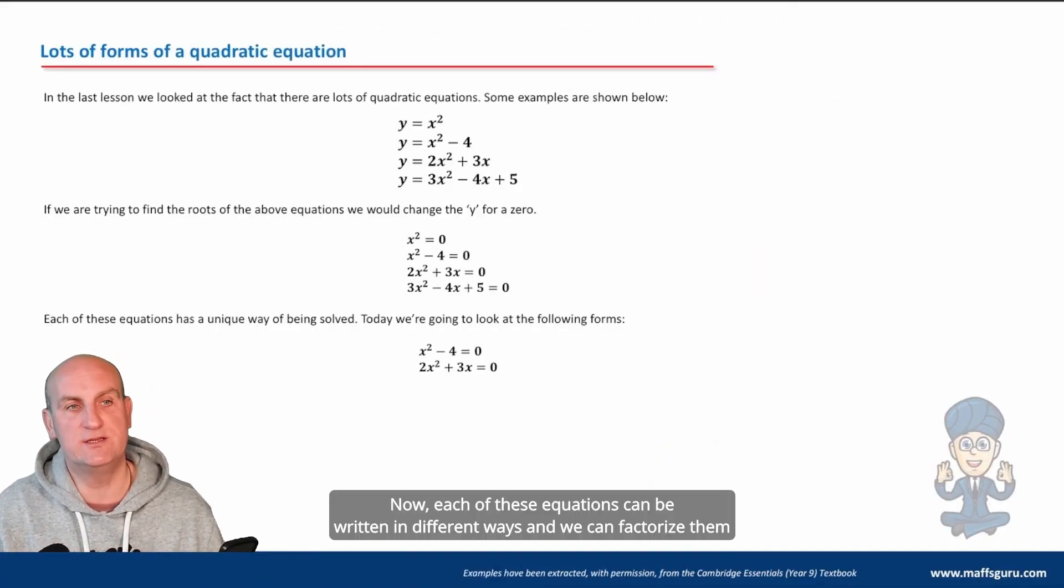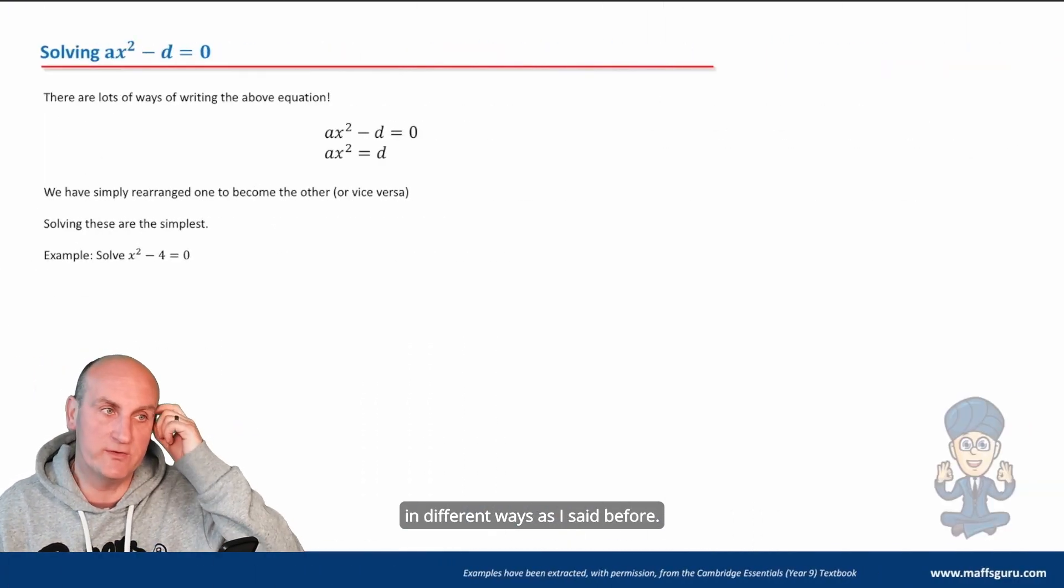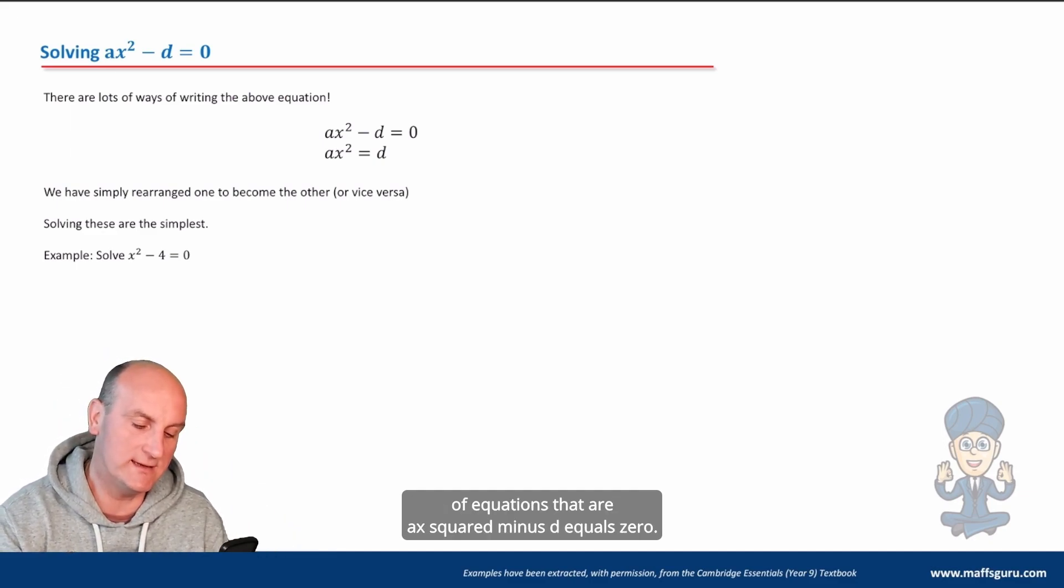Now, each of these equations can be written in different ways and we can factorize them in different ways, as I said before. So let's have a look now at the type of equations that are ax squared minus d equals zero.